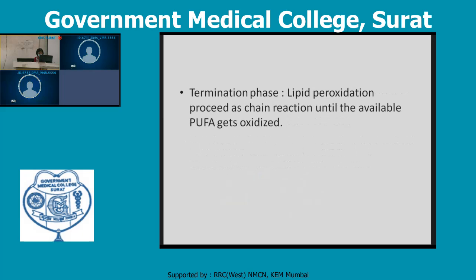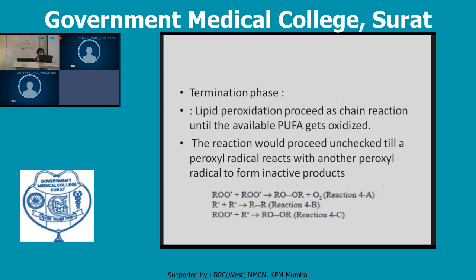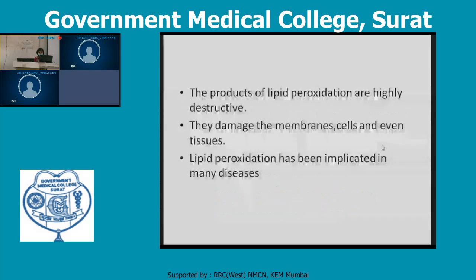In the termination phase, lipid peroxidation proceeds as a chain reaction until the PUFA gets oxidized. The peroxyl radicals form inactive products, and these inactive products are highly destructive — destructive to the membrane, cells, and even tissues. This lipid peroxidation implicates many diseases.